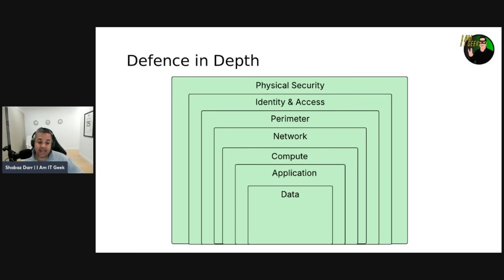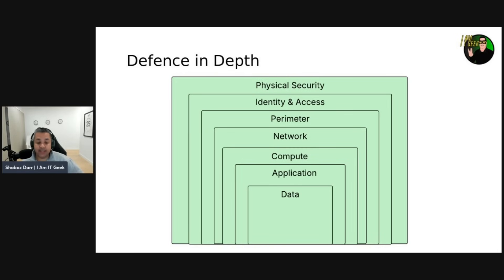The network layer limits communication between resources through segmentation and access controls. The compute layer secures access to virtual machines. The application layer helps ensure that applications are secure and free of security vulnerabilities. Finally, the data layer controls access to business and customer data that you need to protect.